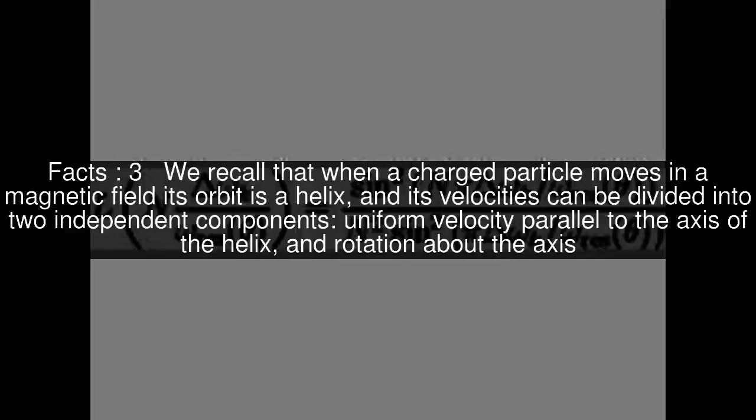We recall that when a charged particle moves in a magnetic field its orbit is a helix, and its velocities can be divided into two independent components: uniform velocity parallel to the axis of the helix and rotation about the axis.